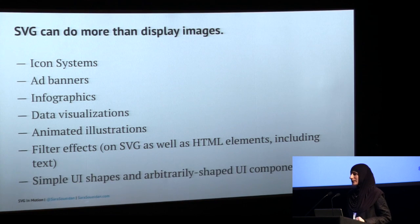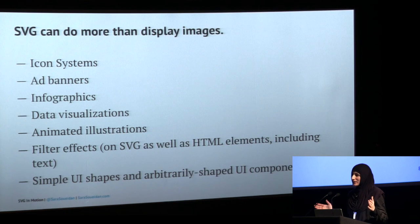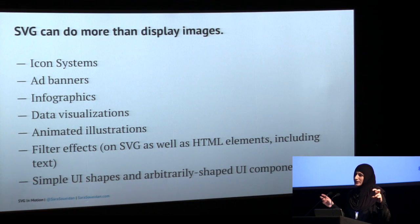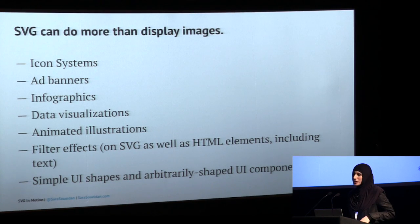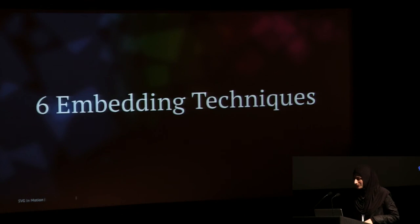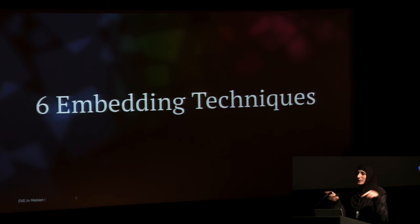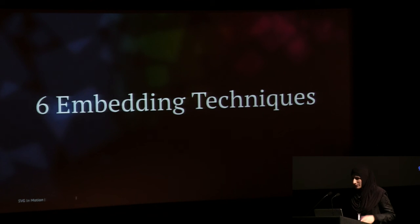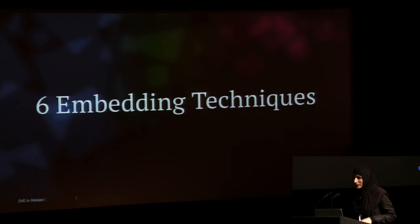Shapes created with SVG are real semantic shapes, unlike empty divs styled to look like shapes. Now, six embedding techniques — there are actually seven. The seventh is the embed tag, which isn't used much anymore, so I won't cover that. I'll talk about the different embedding techniques and fallbacks for each. There are some lesser-known fallback techniques, which is why I wanted to cover them.